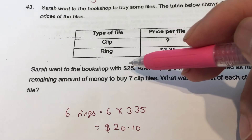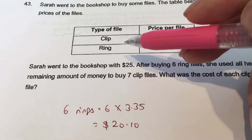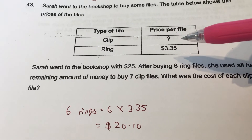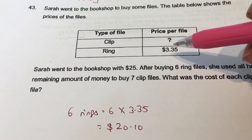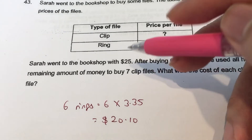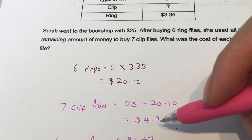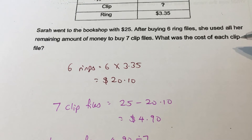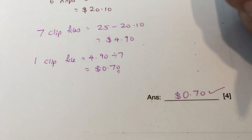The $25 is spent on buying both clip files and ring files. The only thing we know is the price of one ring file, which is $3.35. She bought six, so six times $3.35 gives $20.10. Then $25 minus $20.10 gives $4.90. Since she bought seven clip files, the cost of one clip file is $4.90 divided by seven, which gives 70 cents. So this is the answer.